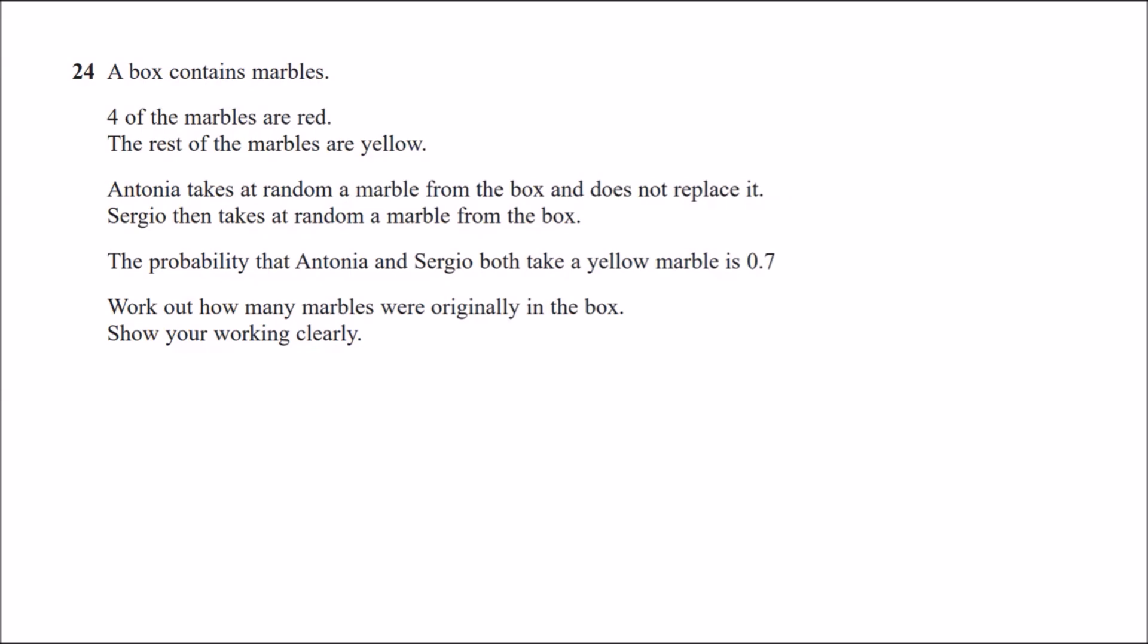And here we are, guys, number 24. So, what do we have? A box contains marbles. Four of them are red, and the rest of the marbles are yellow. Okay, so let's define some things. So you've got four is red, and the rest is yellow. Let's call them N. So this means the total number of marbles must be four plus N. Red plus yellow. Now, Antonia takes at random a marble from the box and does not replace it. Okay, so when she takes it, she keeps it. So it decreases. Sergio then takes at random a marble from the box. The probability Antonia and Sergio both take a yellow marble is 0.7.